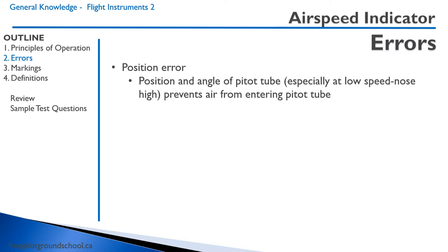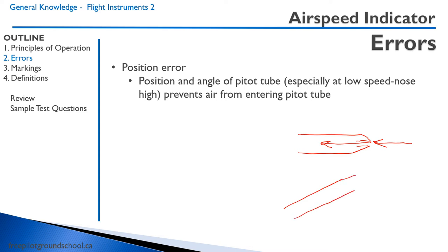The airspeed indicator suffers from a number of errors. The first error is called position error. At high angles of attack, the pitot tube does not get a lot of air. Let me draw this out — here is our pitot tube. Straight and level, all of the air is going into the pitot tube. Now, flying at a high angle of attack, we can see that not a lot of air is going to go in there.